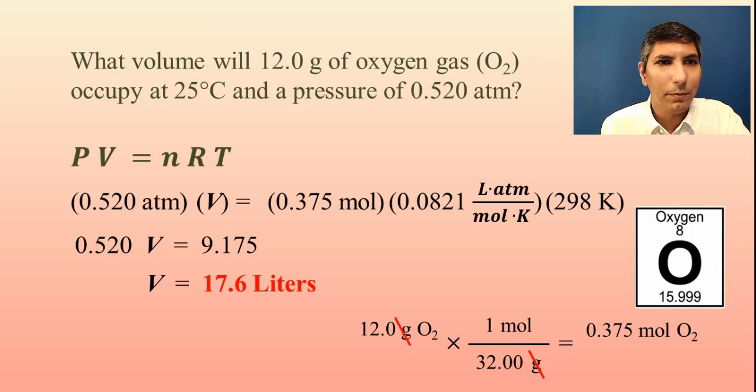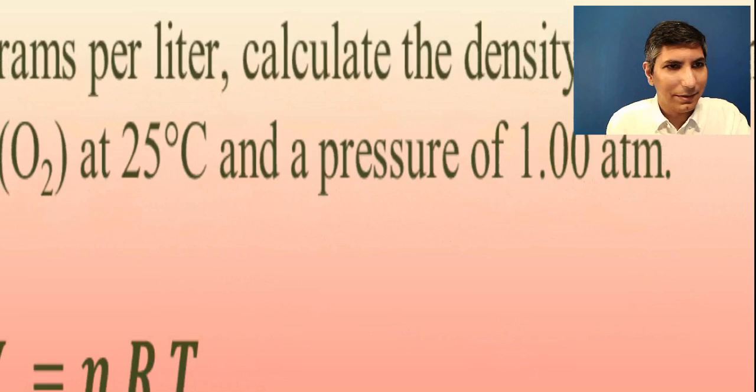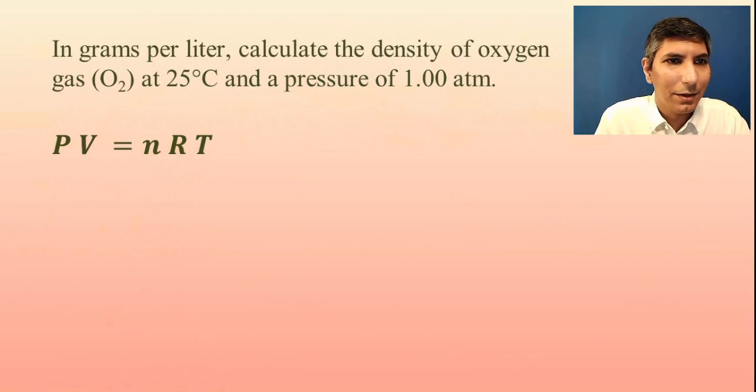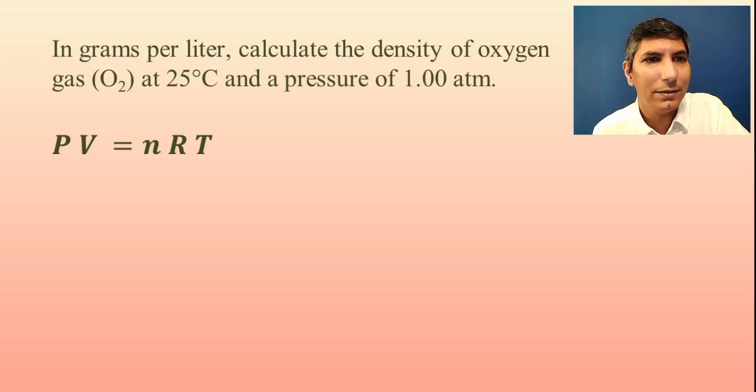Let's do one more example. This one is a little bit different. This one says, in grams per liter, calculate the density of oxygen gas, O2, at 25 degrees Celsius and a pressure of 1.00 atmospheres.